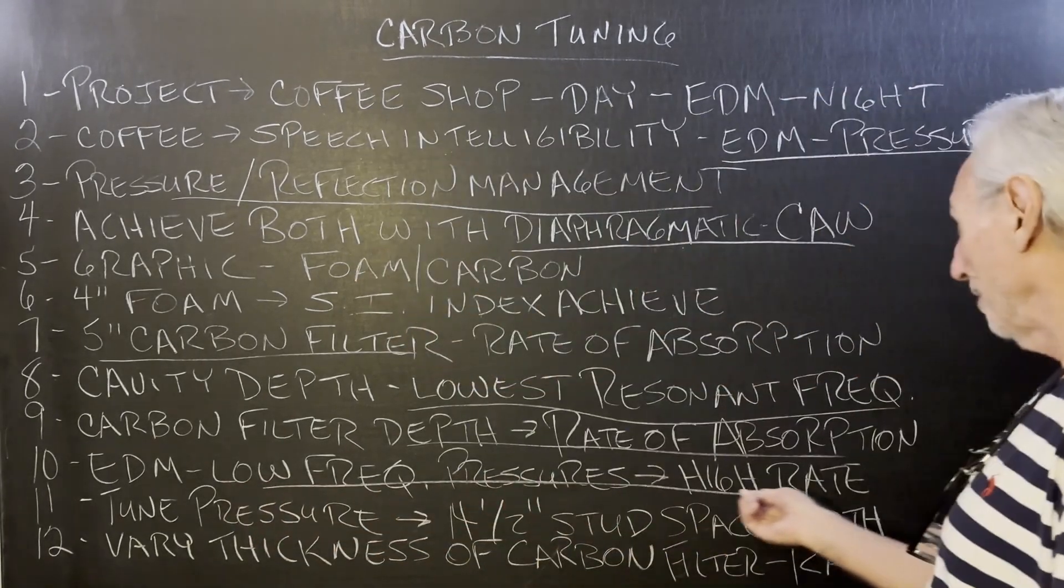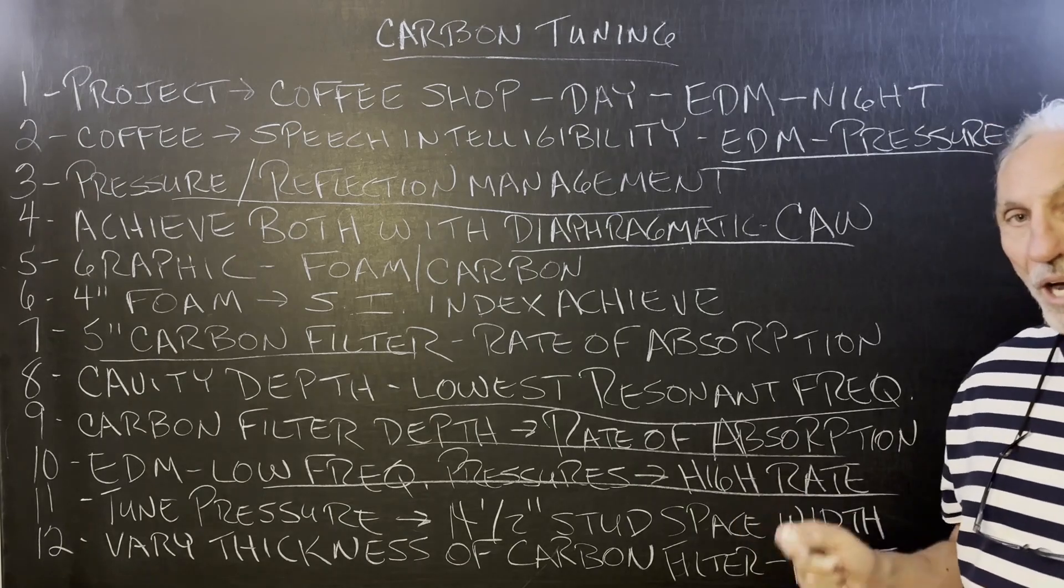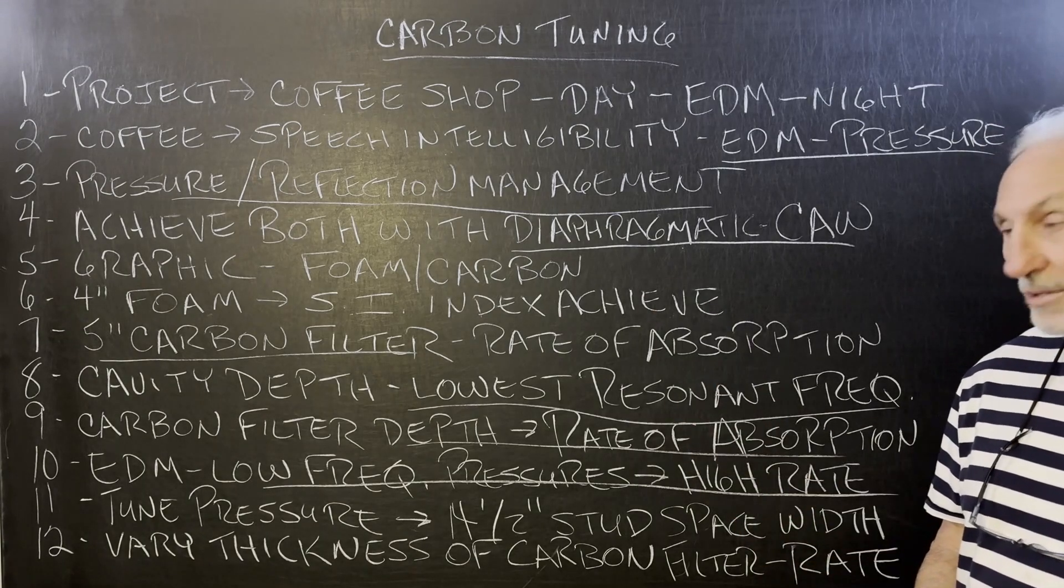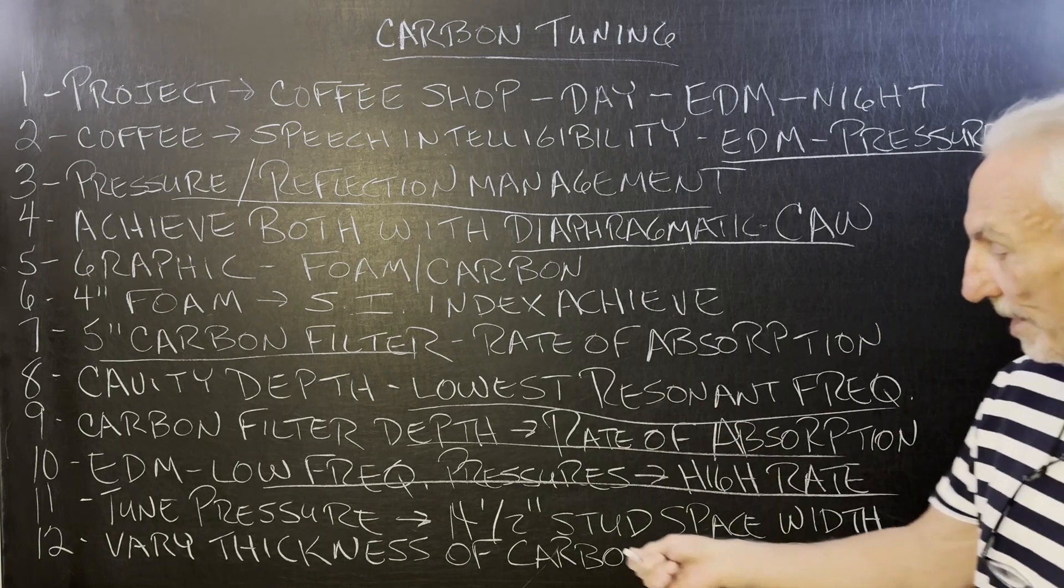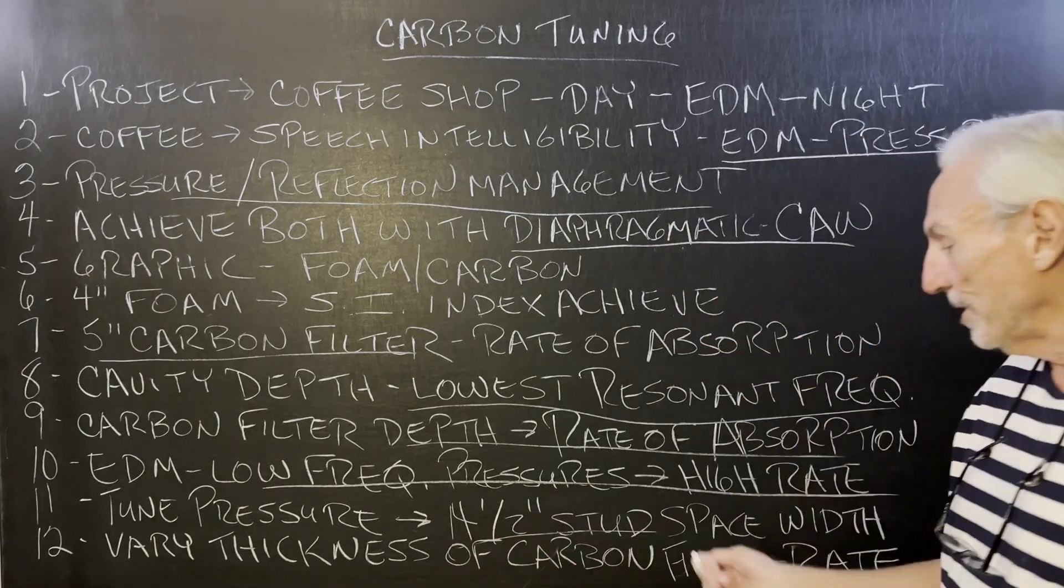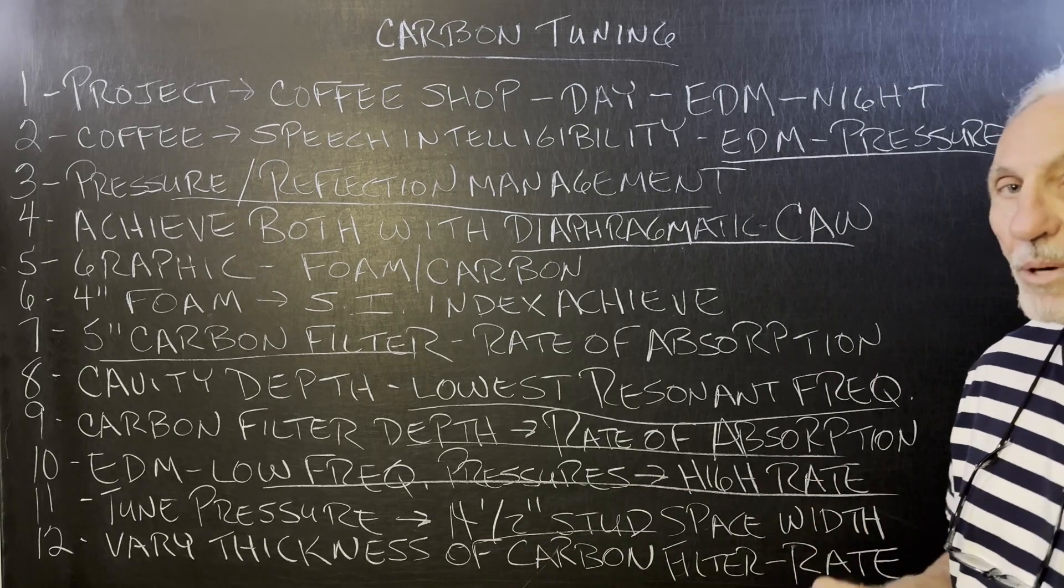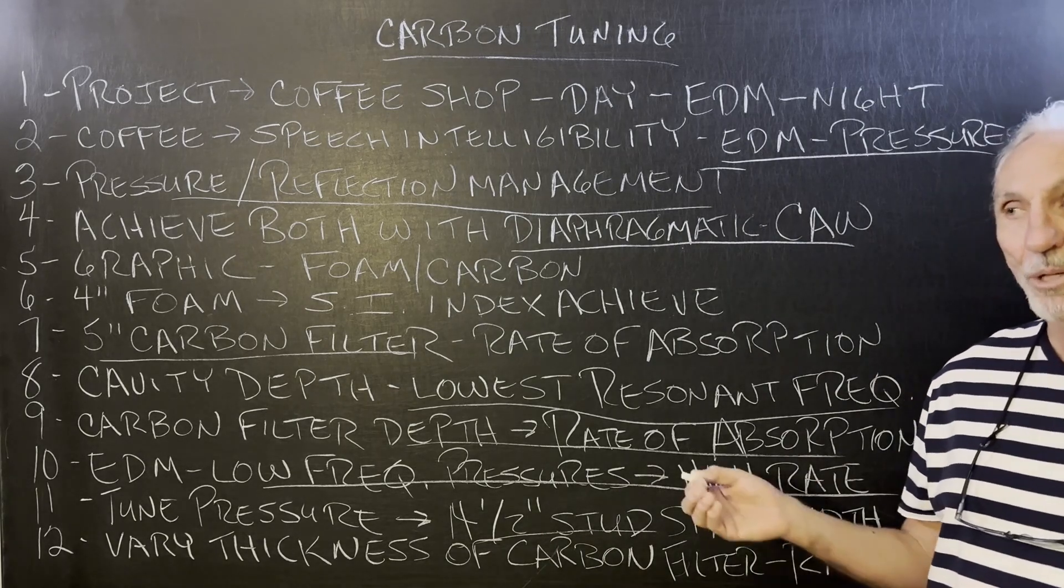So EDM, we've got all this low frequency pressure, so we need a really high rate of absorption. That's why the carbon filter is five inches thick. Now, by placing these every 14 and a half inches between studs, we're able to tune and manage the pressure every 14 and a half inches. What a wonderful tool.